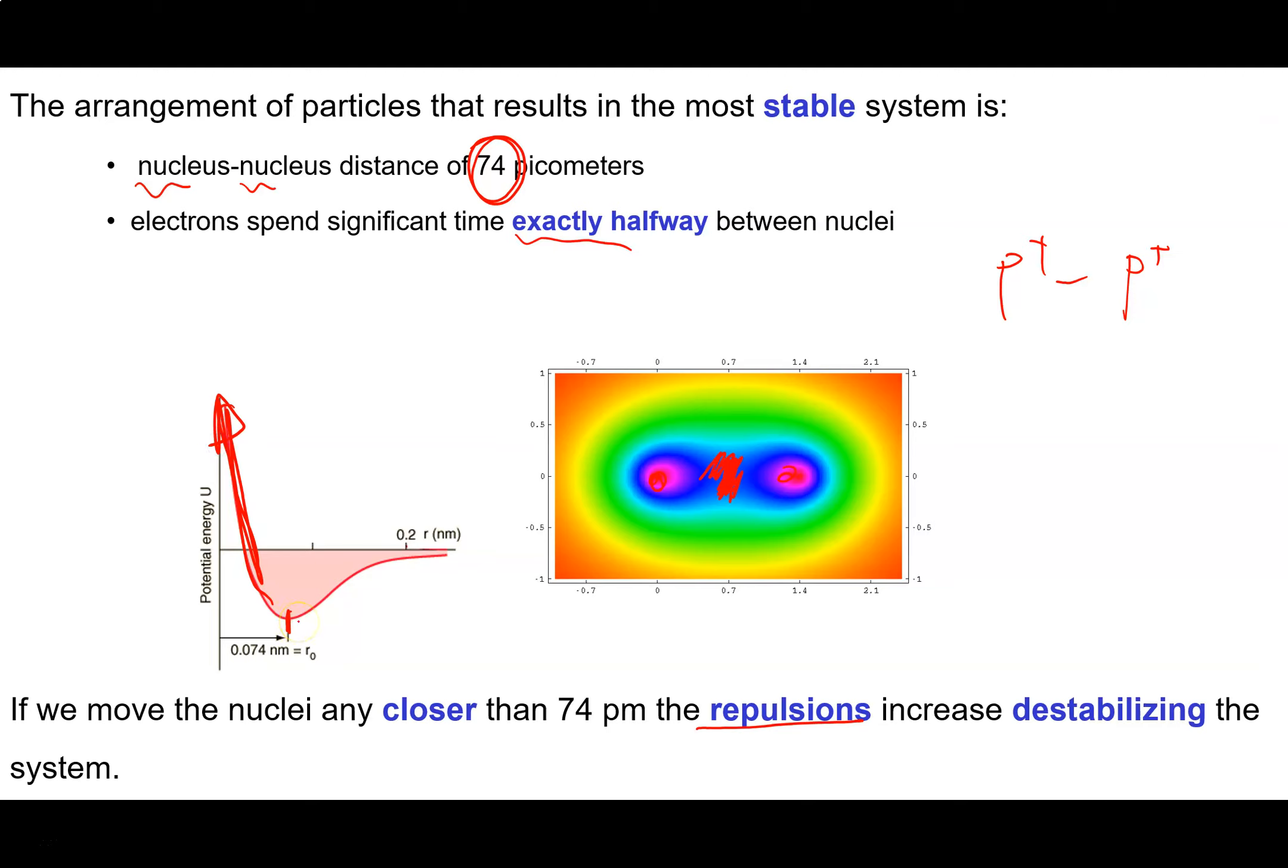If I have them further apart than 74 picometers, then what happens is that I weaken the electron-proton attraction and my bond gets weaker and again that energy there rises.